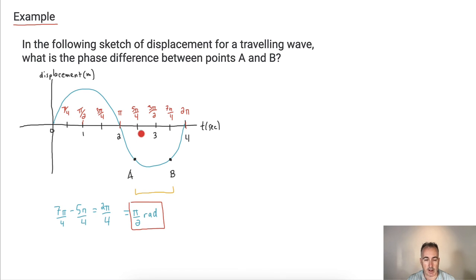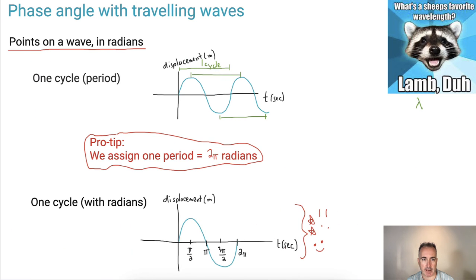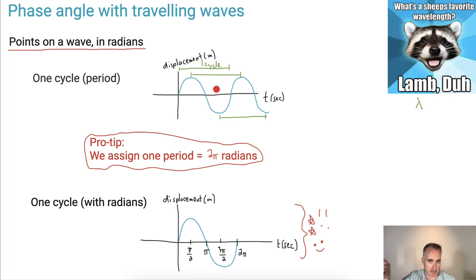Another way to look at it: each single square is a π over 4, or every 2 of these is a π over 2. The distance from this one to this one — there are 2 of these little pieces, so that must also be π over 2. It doesn't matter how you get there, as long as you can get there. So we've learned about phase angle with traveling waves. The key was: assign 2π to your last point in your cycle, then figure out the rest of the points and find the distance between them.